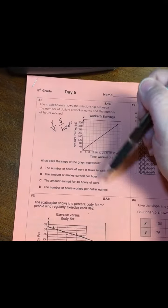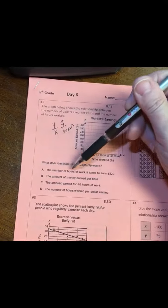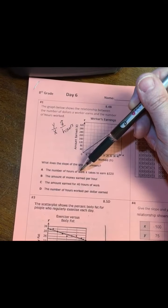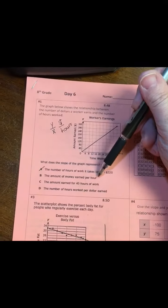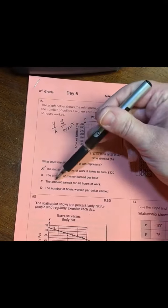So this is going to be how much money per hour. So we just need to figure out which one of these says that. So A says the number of hours of work it takes to earn $320, well that's not it. The amount of money earned per hour, that sounds pretty good. The amount earned for 40 hours per week, that's not it.